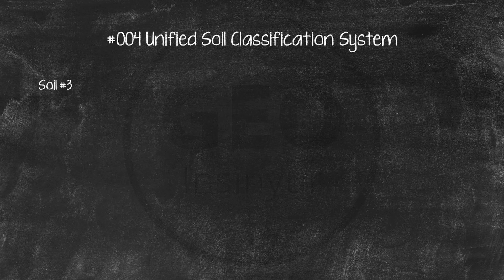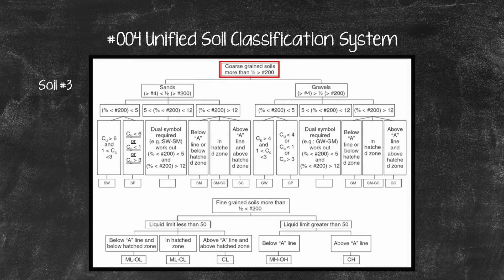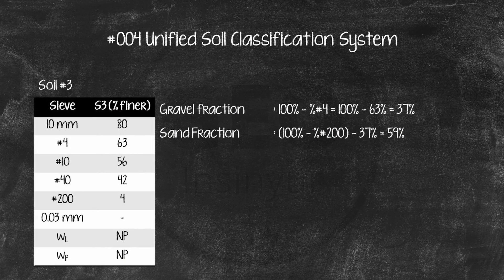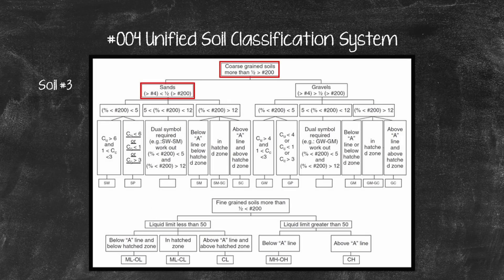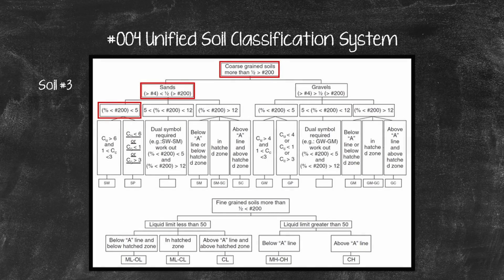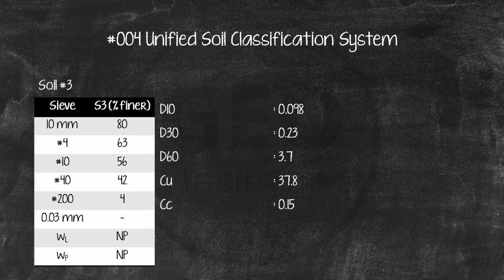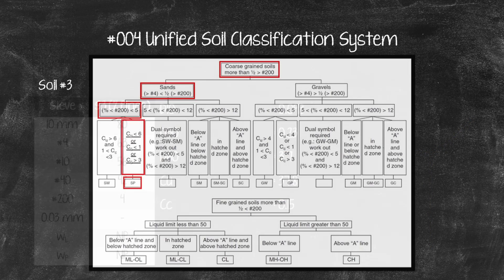Soil No. 3: The coarse fraction is larger than the fine fraction, so it is a coarse-grained soil. The sand fraction is larger than the gravel fraction, so it falls under the sand category. The fine fraction is under 5%, so it is either SW or SP. Checking the particle size chart for D10, D30, and D60, Soil No. 3 is classified as SP based on the Cu and Cc values.